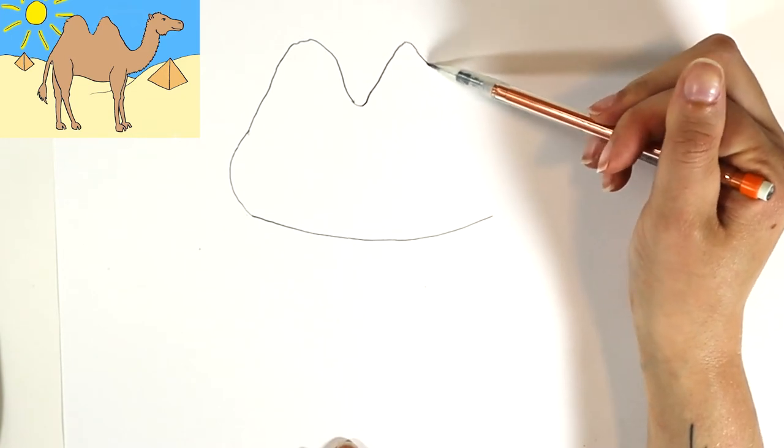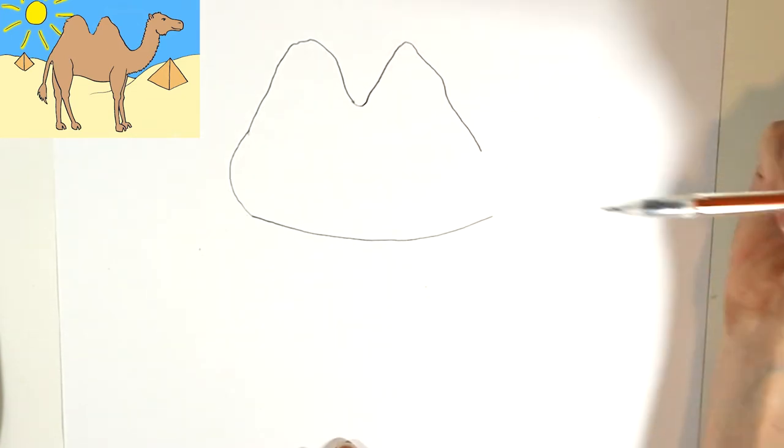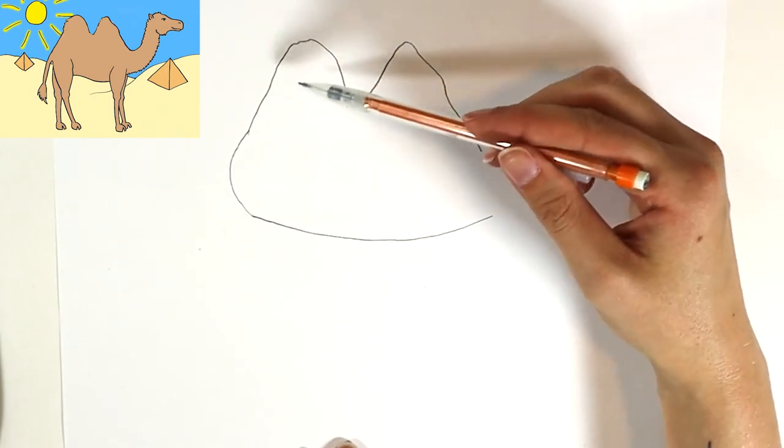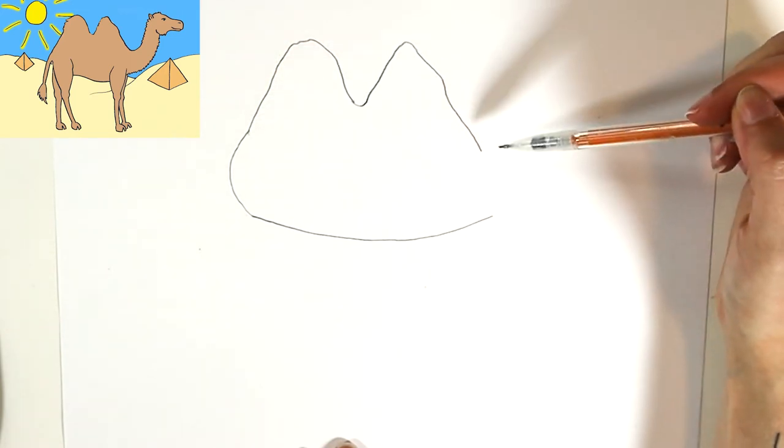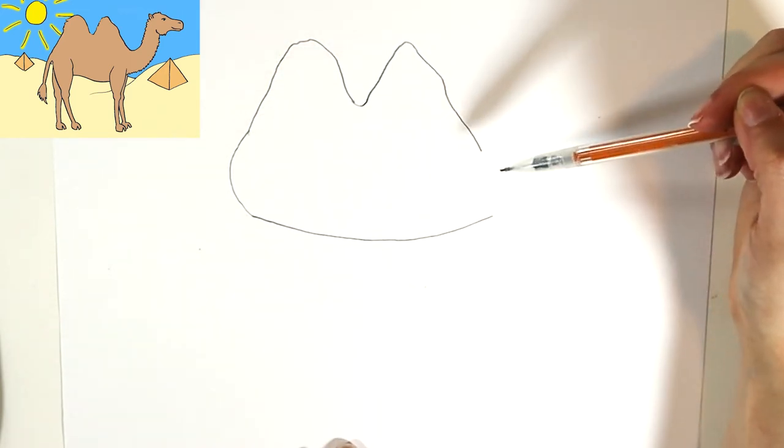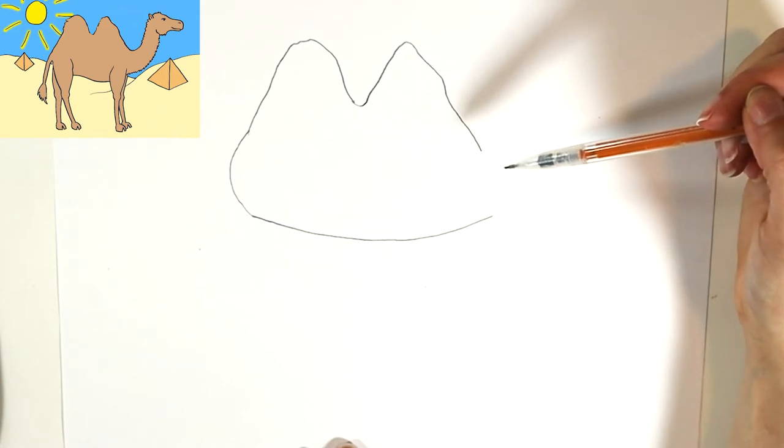This one has a little slant to it like that. If you want to just do one, then you just do one curve and you can leave the empty space for where the neck is going to be, which is what we're gonna work on next.